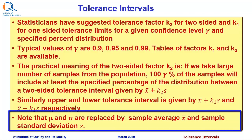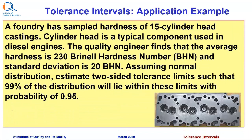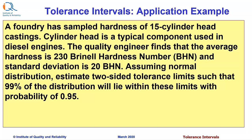Note that population mean and sigma are replaced by sample average X̄ and sample standard deviation S. Let us now see an application example. A foundry has sampled the hardness of 15 cylinder head castings. The cylinder head is a typical component used in diesel engines. The quality engineer finds that the average hardness is 230 Brinell hardness number (BHN) and standard deviation is 20 BHN. Assuming normal distribution, estimate two-sided tolerance limits such that 99% of the distribution will lie within these limits with a confidence level of 0.95.